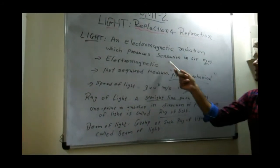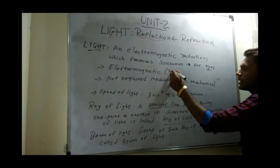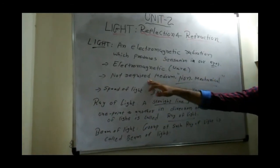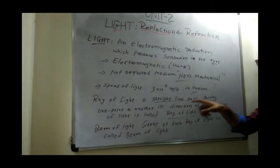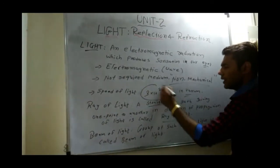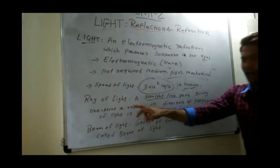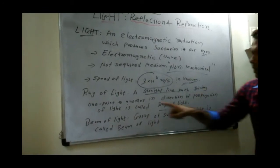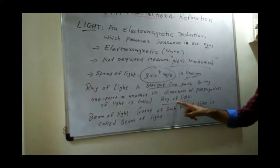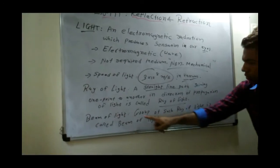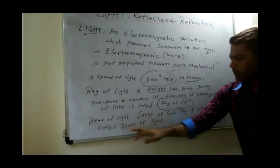To recap: light is an electromagnetic radiation which produces sensation in our eyes. It is an electromagnetic wave, it is non-mechanical meaning it does not require any medium. Speed of light in vacuum is 3 × 10⁸ meters per second. A ray of light is a straight line path joining one point to another in the direction of propagation of light. A group of such rays is called a beam of light.